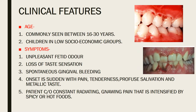The clinical features: ANUG is commonly seen between 16 to 30 years of age, and in children in lower socioeconomic groups. Symptoms reported by patients include unpleasant fetid odor (malodor), loss of taste sensation, gingival bleeding, and sudden onset of necrosis with pain and tenderness.